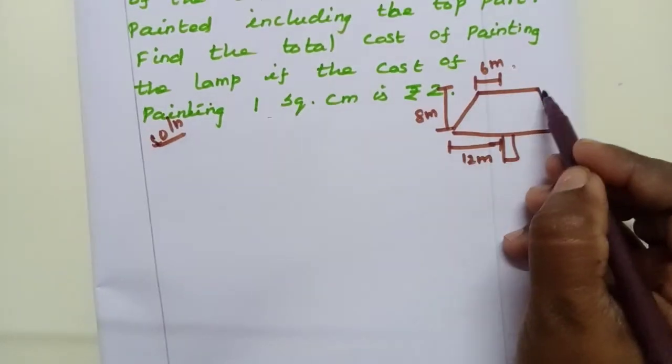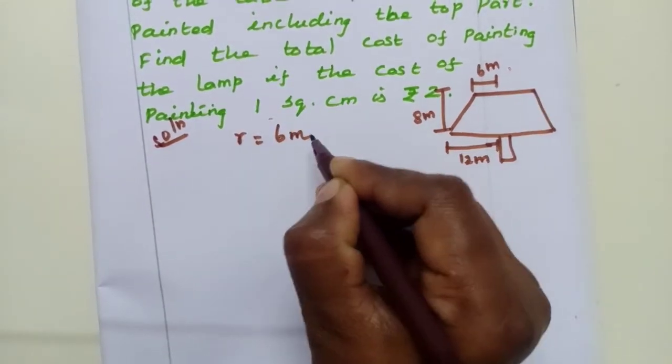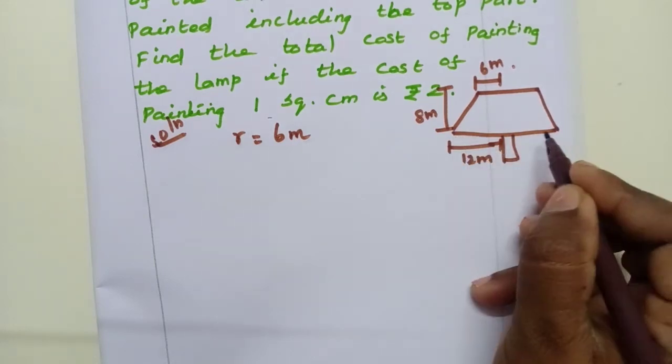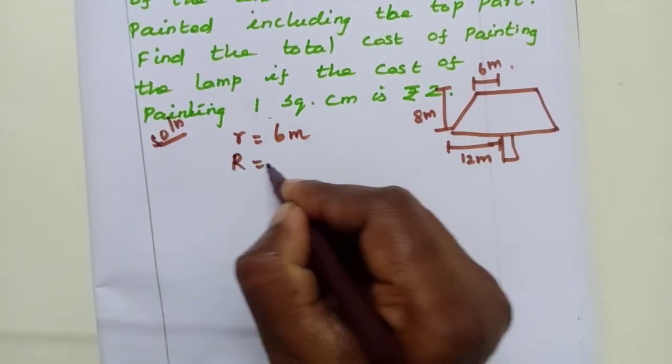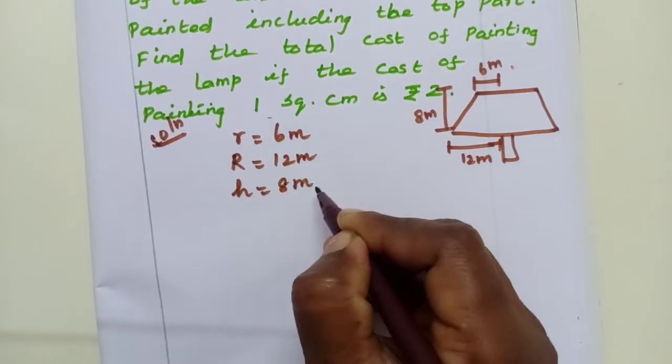In the top, one circle radius is 6 meters. This is the base circle, so capital R is 12 meters and height is equal to 8 meters.